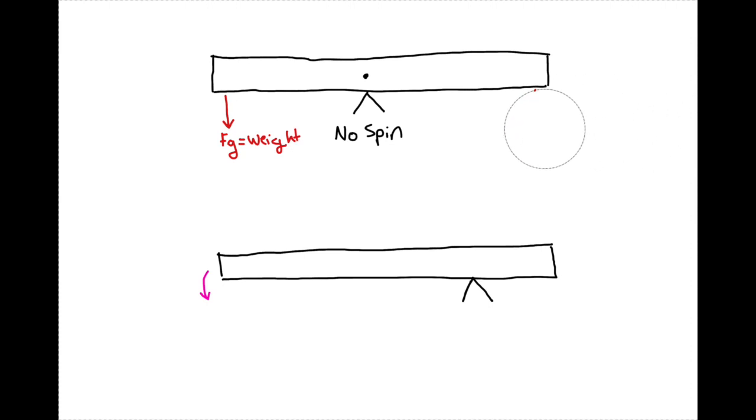We call this the center of mass. So say this was like a meter stick that had a mass of 100 grams. I would say this meter stick has a weight equal to mg, 100 grams, which is really 0.1 kilograms times 10. Now, if we look, what is the lever arm of this force on this object from its spinning point?